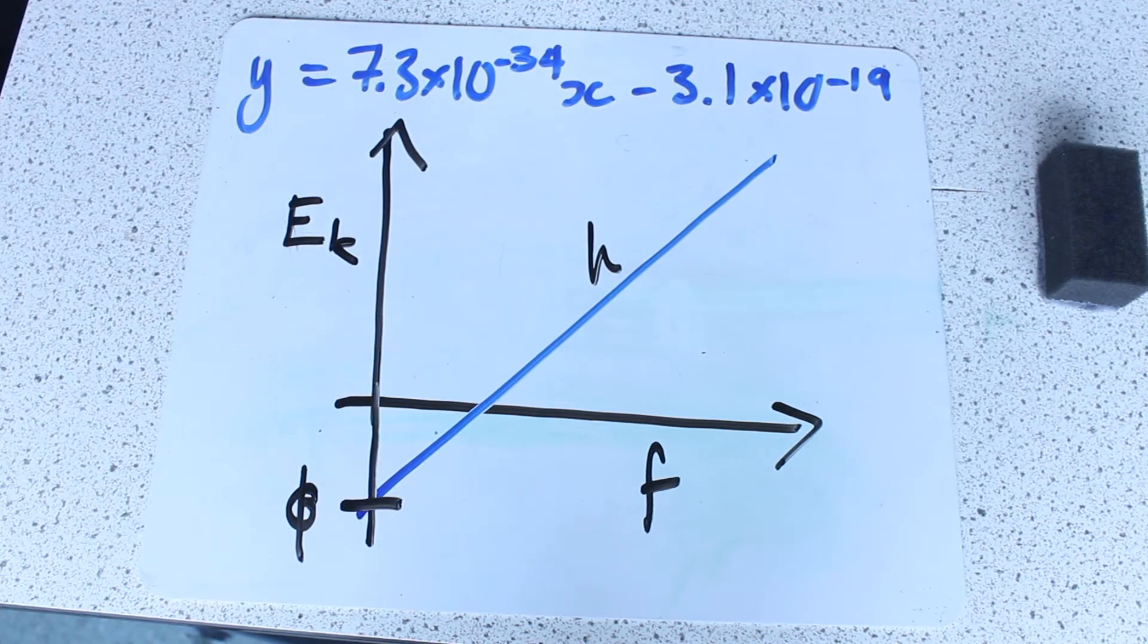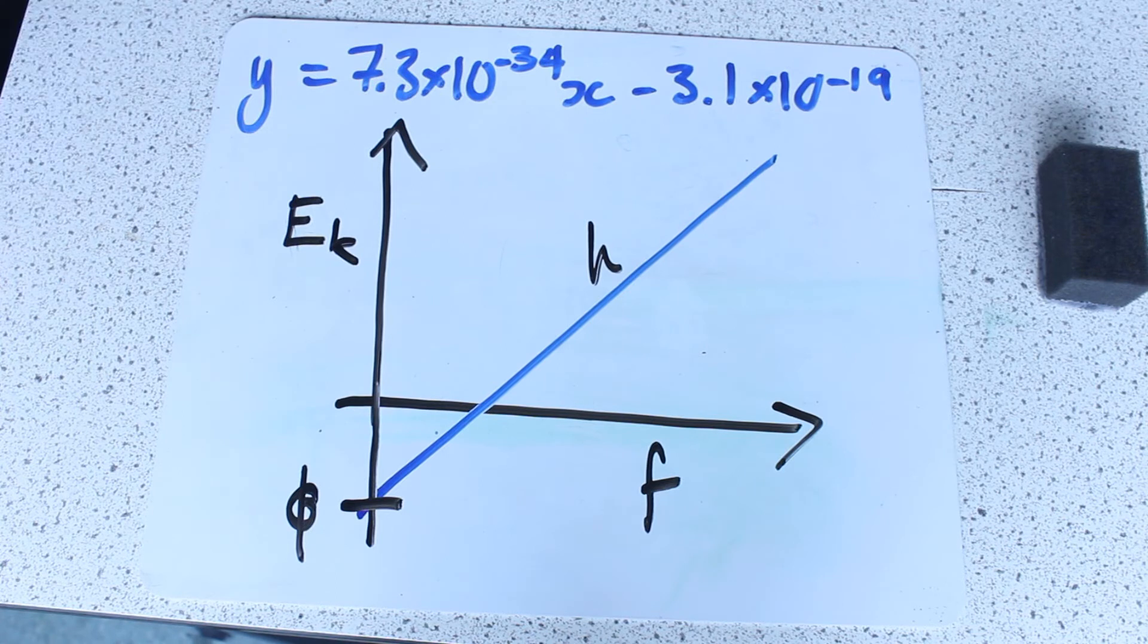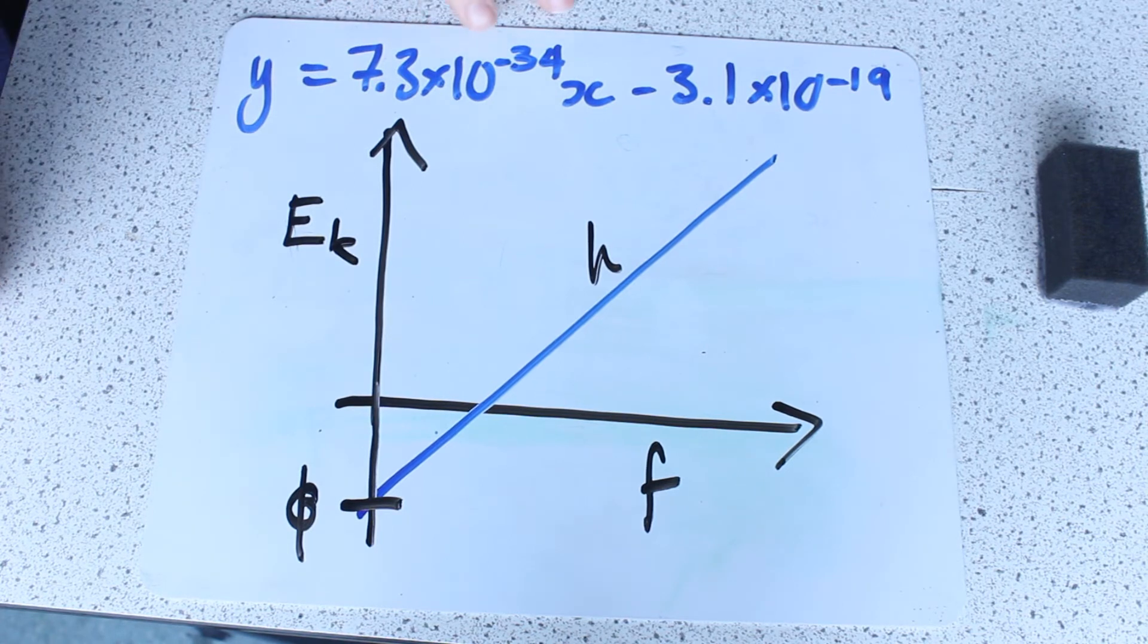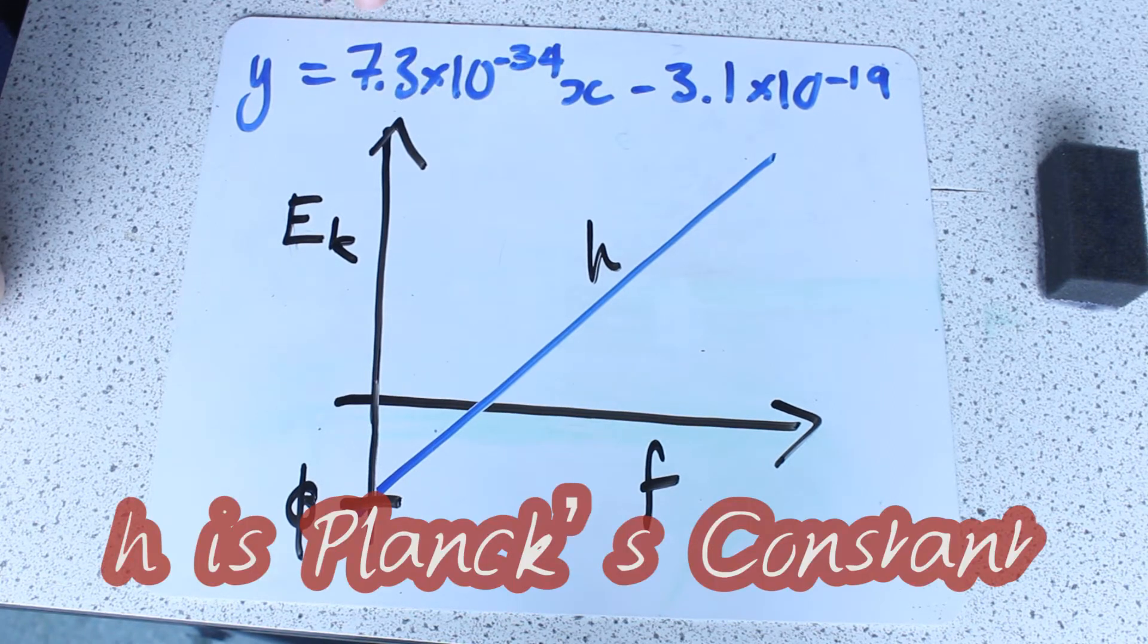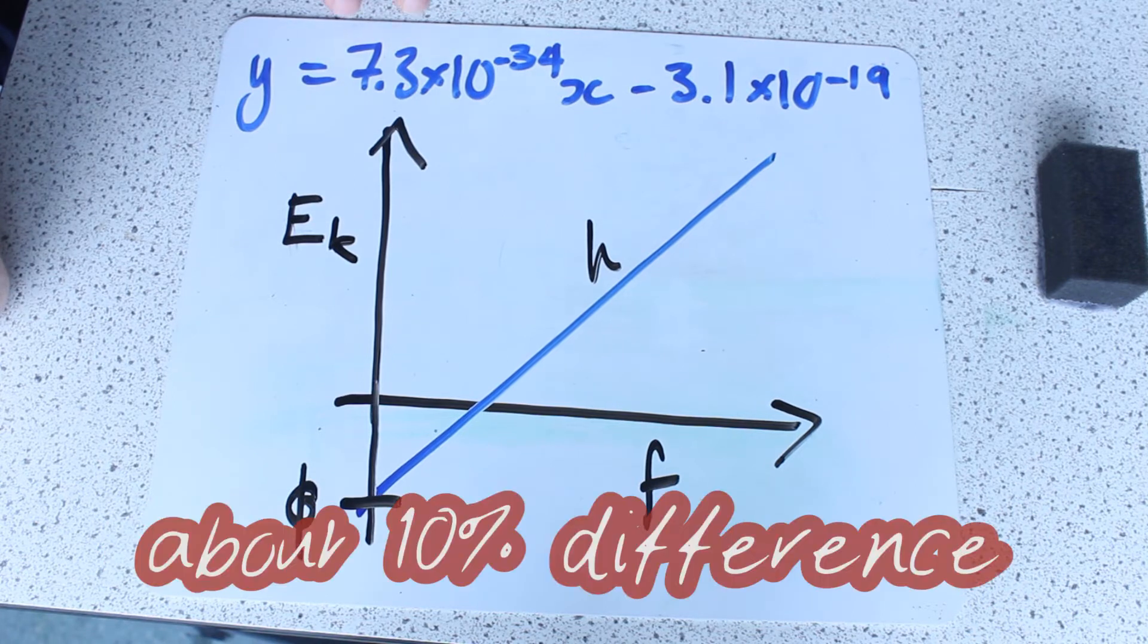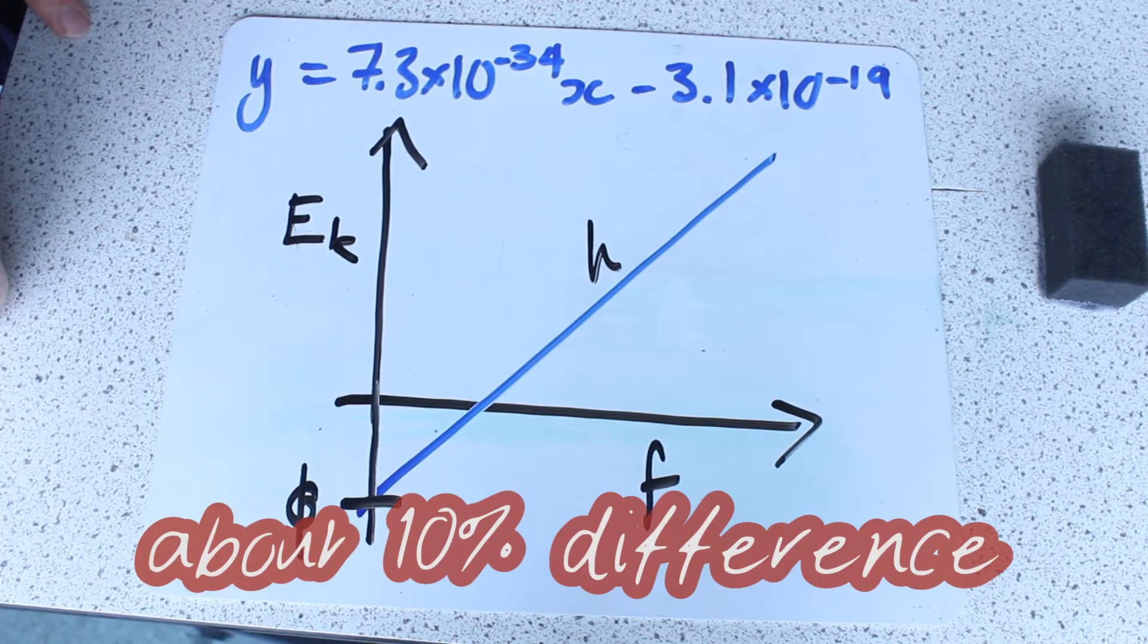So Excel, rather usefully, gives us Y equals MX plus C without us having to actually do the analysis ourselves. 7.3 times 10 to the minus 34 is our gradient, M, which is h, Planck's constant. Not bad, since Planck's constant is 6.63 times 10 to the minus 34. So pretty reasonable order of magnitude result there.